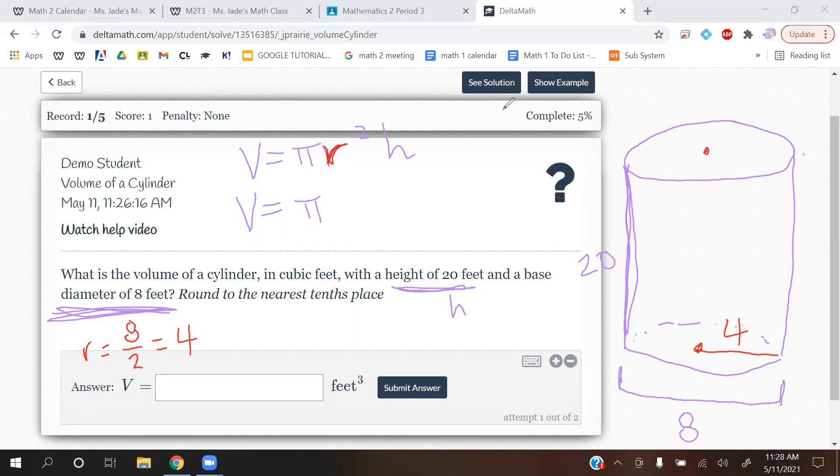I'll draw it again here: center of that circular base to the outside, that's your radius, so it will be 4 because the diameter is just double your radius. So for the r, I'm going to put 4, and then we're going to square it, and then for the h, that's the height, so they told us the height was 20. So now I have π, 4 squared, 20.